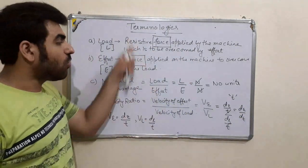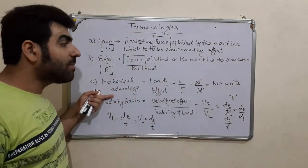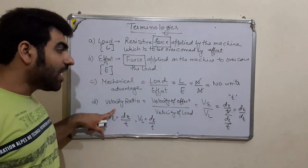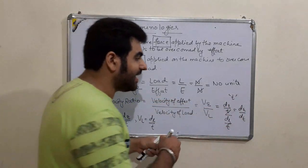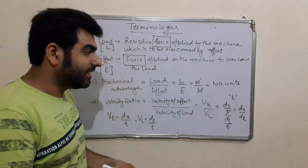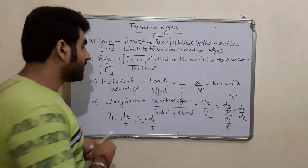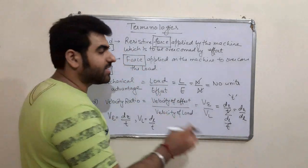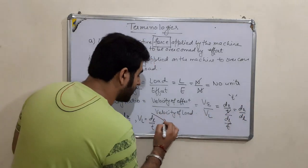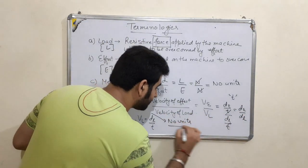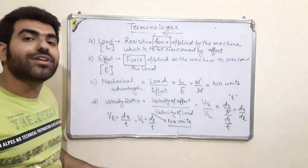So velocity ratio equals VE/VL, which can also be written as DE/DL — distance moved by effort divided by distance moved by load. Since velocity is in m/s divided by m/s, or meters divided by meters, velocity ratio also has no units. Both mechanical advantage and velocity ratio are unitless quantities.